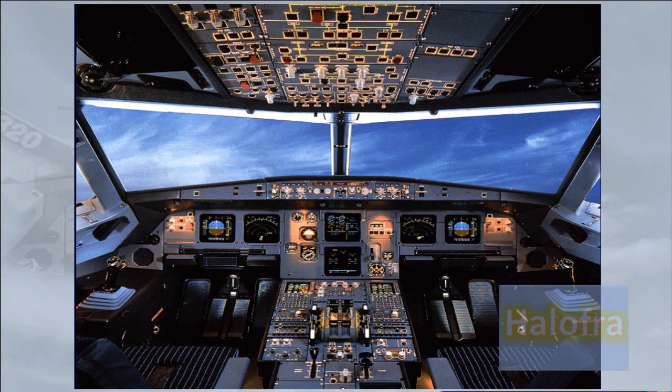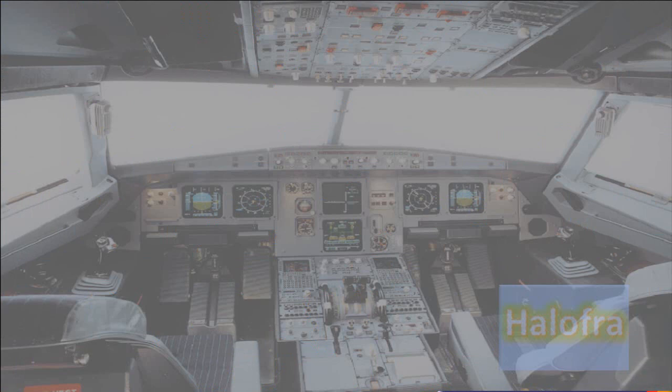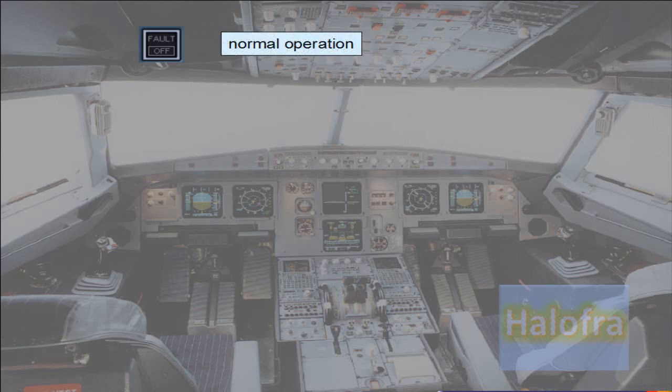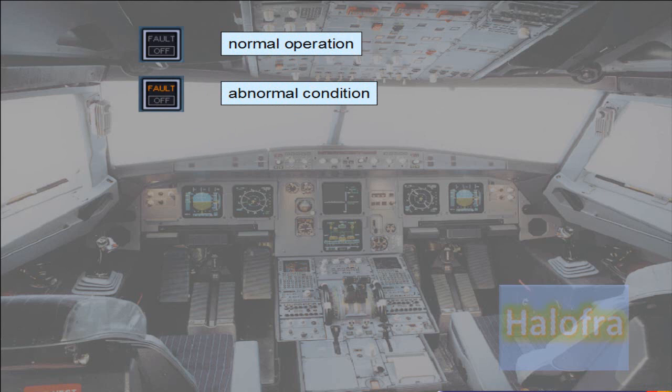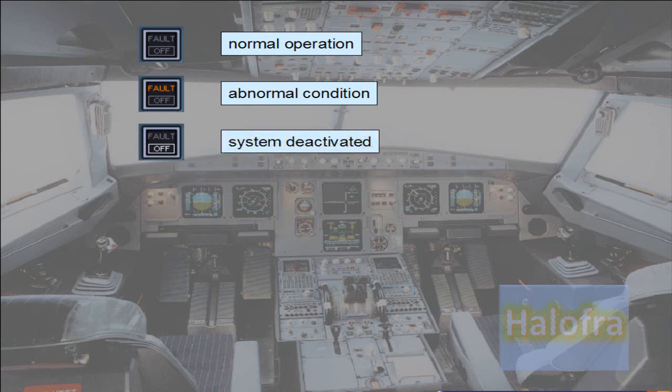Let's look at some switches and show the different possibilities. For the majority of the switches on the overhead panel, the push-button switch logic is: normal operation configuration — no light showing, the lights-out philosophy. Abnormal condition — amber fault light. This assists identification of the switch associated with an abnormal condition.